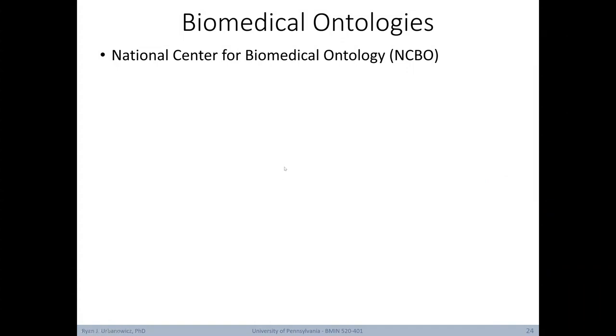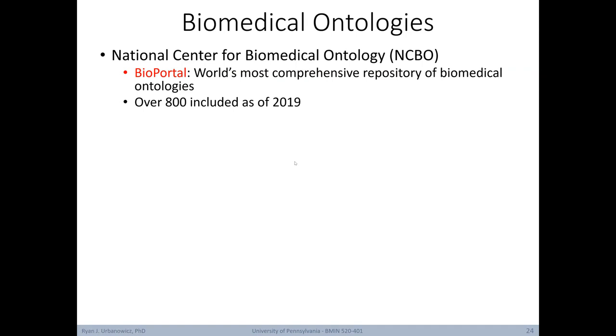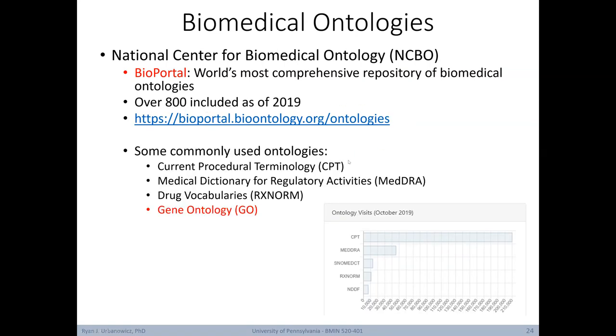The National Center for Biomedical Ontology, or the NCBO, hosts the BioPortal, which is the world's most comprehensive repository of biomedical ontologies. As of 2019, there's over 800 different biomedical ontologies included. Here are some of the most commonly used ontologies, including the Current Procedural Terminology or CPT, the Medical Dictionary for Regulatory Activities or MEDDRA, which we'll learn a bit more about later in this lecture, the Drug Vocabularies Ontology or RxNorm, which we'll also talk about a bit more later, and the best known Gene Ontology or GO, which we'll focus on here in the next section.